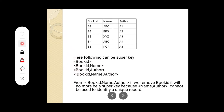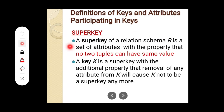These are the super keys. For primary key, relationally, we can have only a single primary key. But for super key, we can have a combination of many attributes considered as a super key. This is called a super key. Now, another term related to super key: a key K is a super key with the additional property that removal of any attribute from K will cause K not to be a super key anymore.